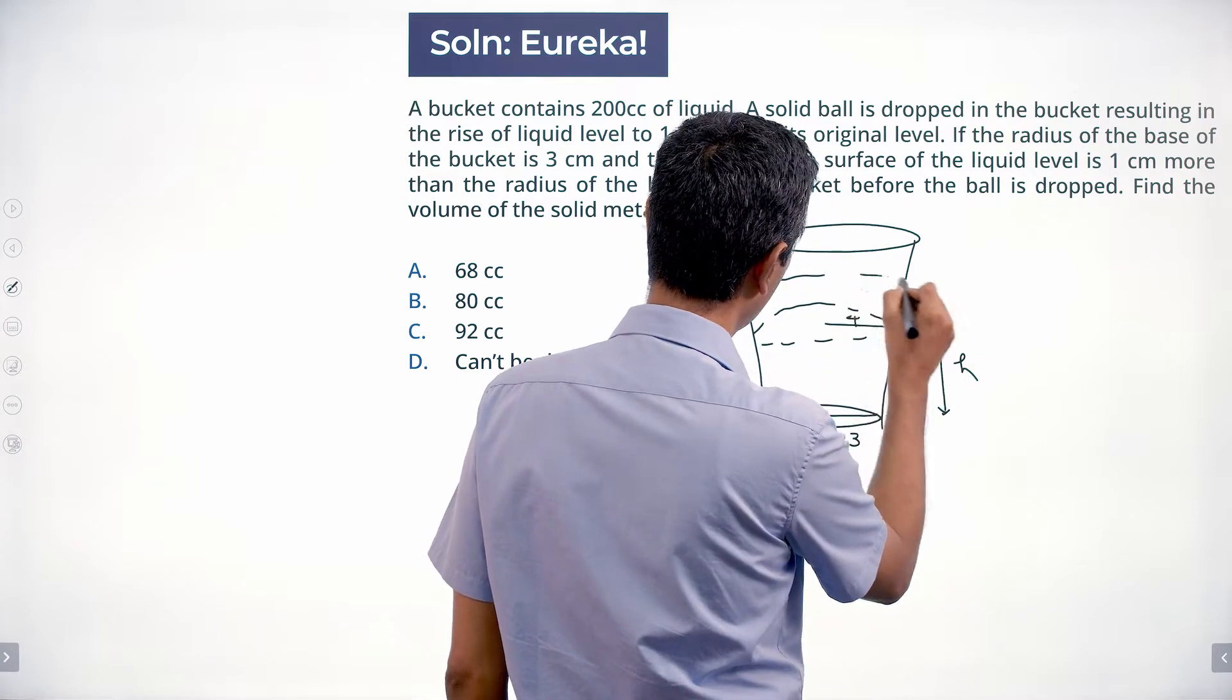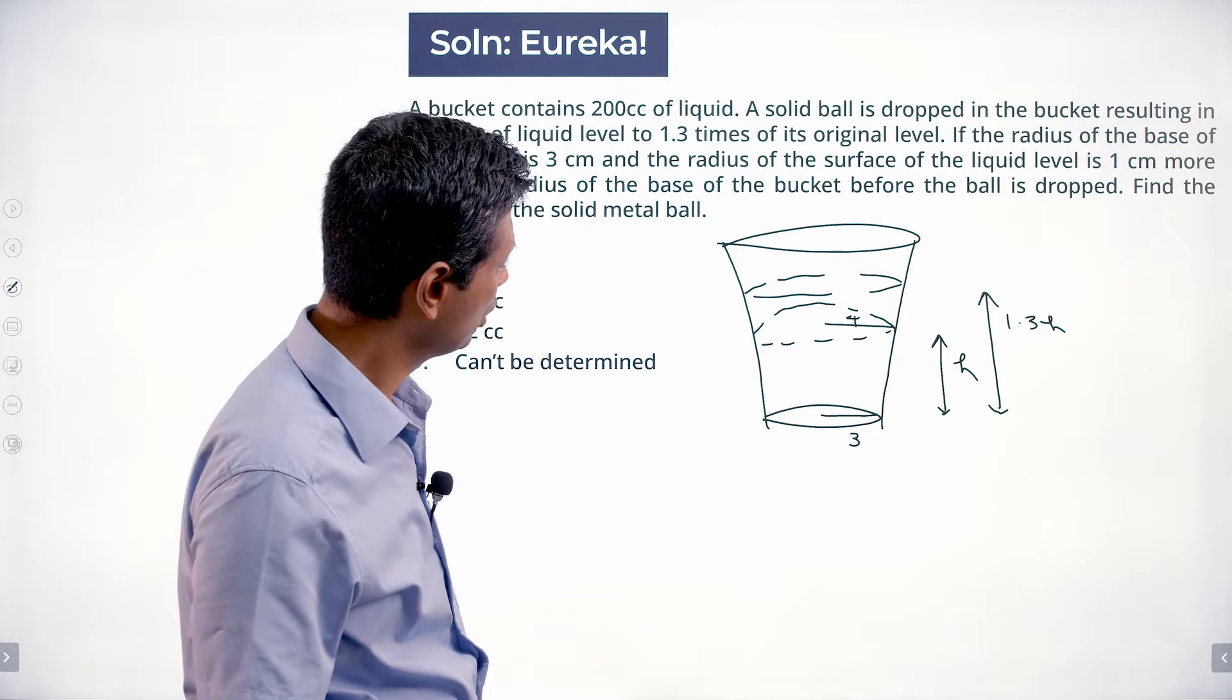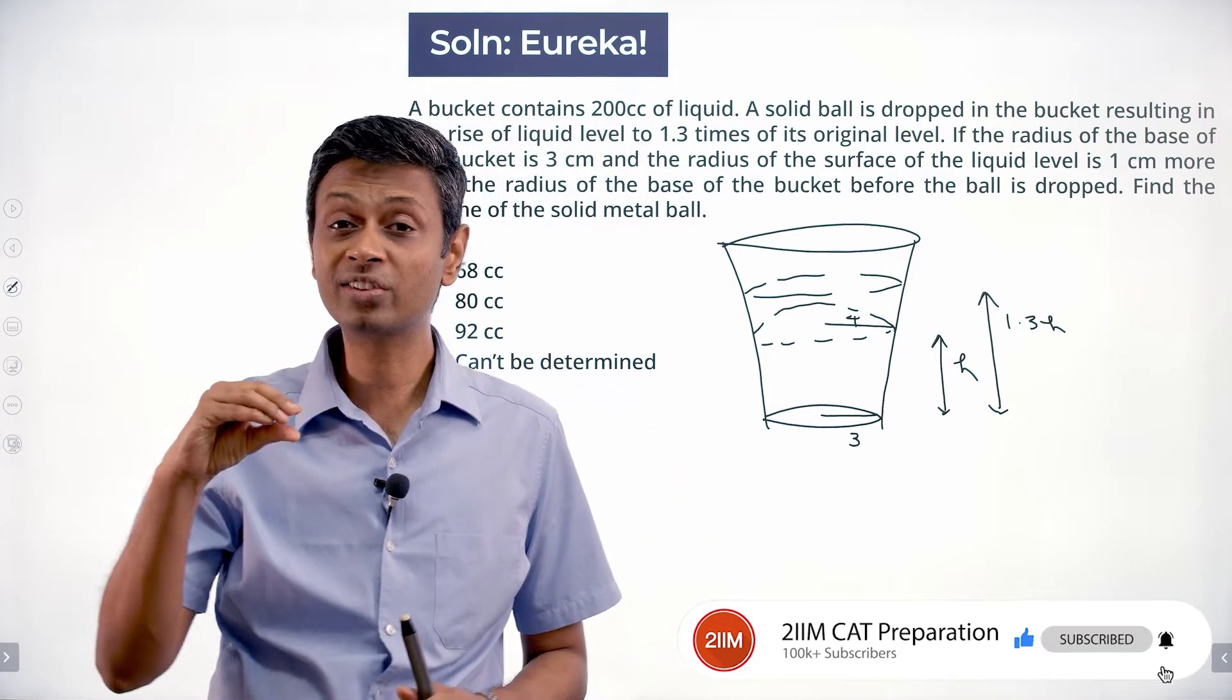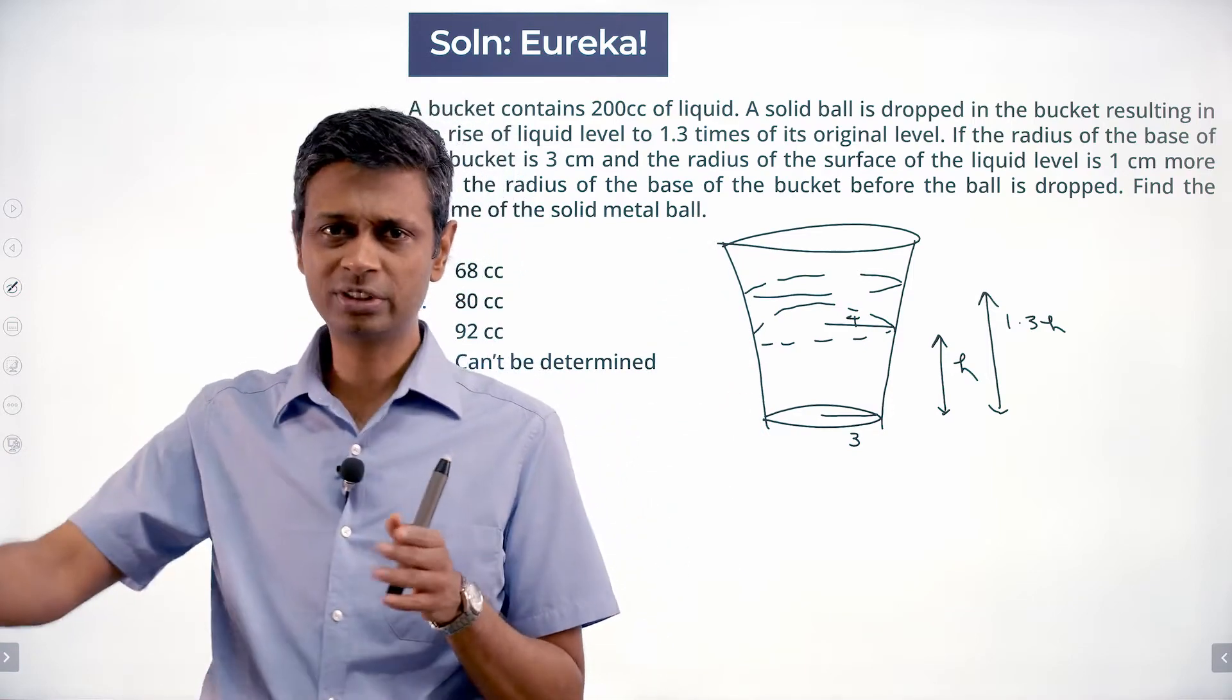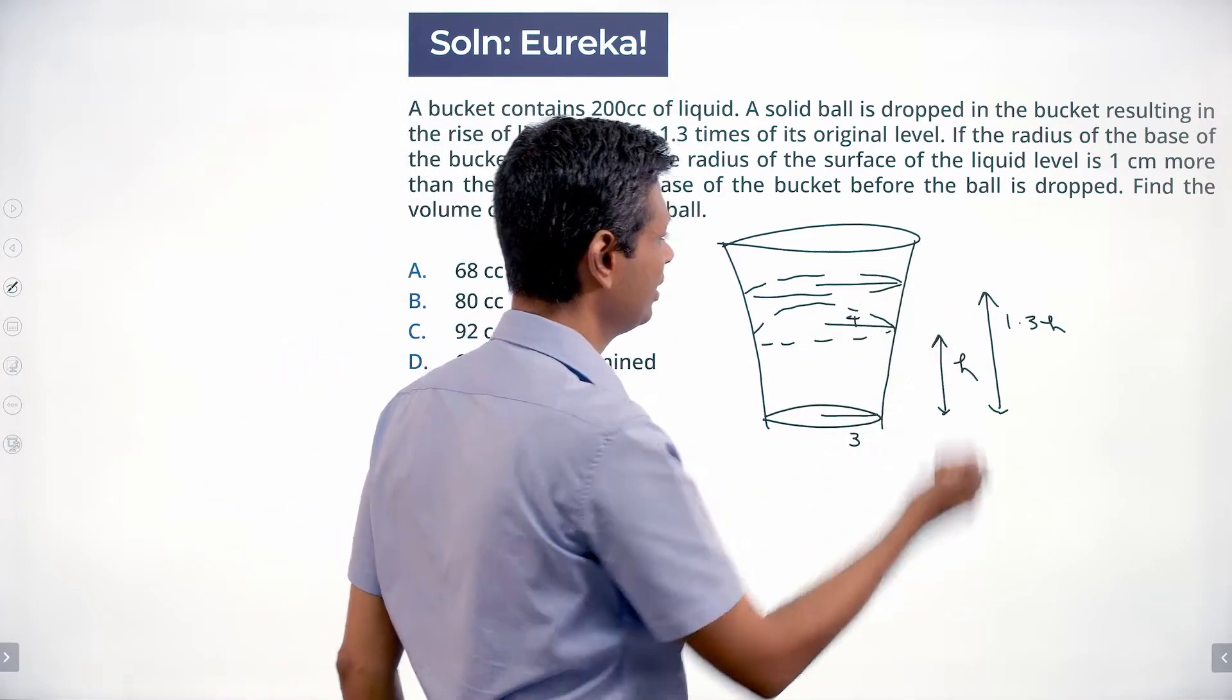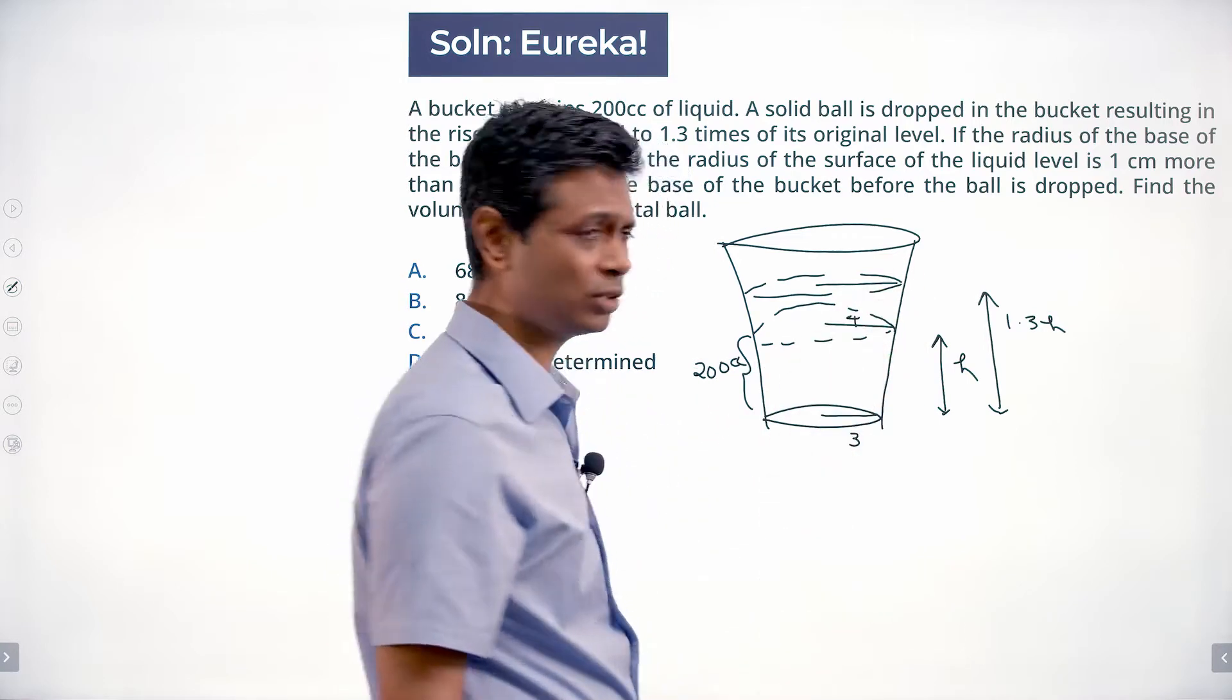Now the problem here is we cannot simply calculate volume of the cylinder because the column of water is no longer a cylindrical column. This is a frustum, which is basically a cone cut off. So now how do you figure out what is the radius here? You find that radius, then we have got something going. This volume here is 200 cc, but we don't know that radius. How do I do this?